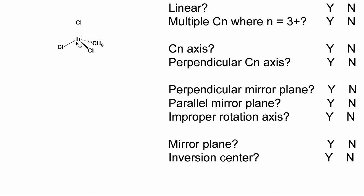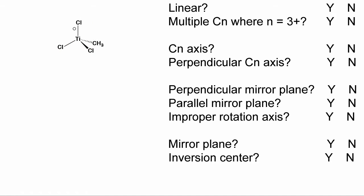The first molecule we'll look at is this trichloromethyl titanium complex. The first thing we can see is that it has a tetrahedral geometry, but it's not going to be in the tetrahedral point group because we don't have equivalent ligands at all four corners — we have three chlorides and one methyl group. These three chlorides are all symmetrically equivalent by a C3 axis that goes through the titanium-methyl bond.